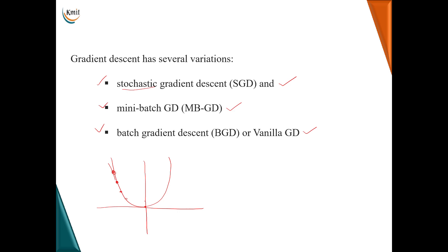One point not mentioned in the previous session: gradient descent takes larger steps when it is far away from the local minima, and as it approaches the minimum value it takes smaller steps to avoid overshooting and missing the minima. The formula is w_new = w_old − η × slope, where η is the learning rate or scaling factor. We also discussed the cases where η is very large or very small.